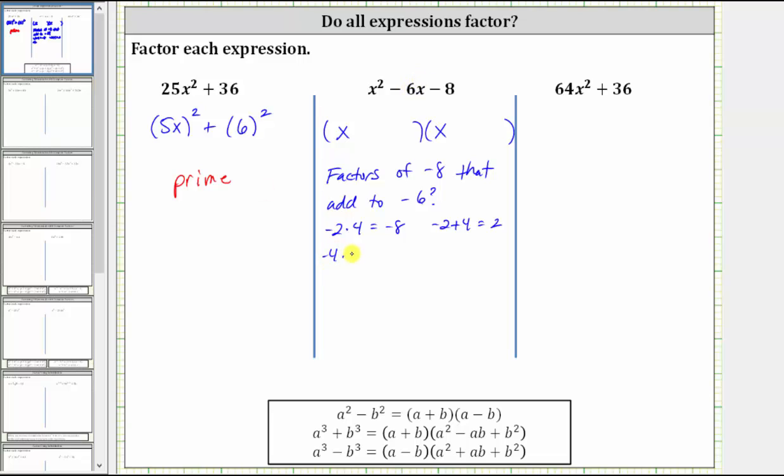Negative four times positive two is also negative eight, but negative four plus two is negative two, which is not negative six. Well, we could also try negative eight times one, but negative eight plus one is equal to negative seven, not negative six. And we could also try negative one times eight, which is negative eight, but negative one plus eight is positive seven, not negative six.